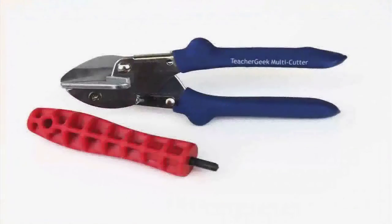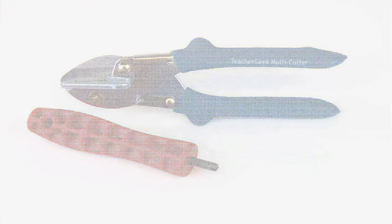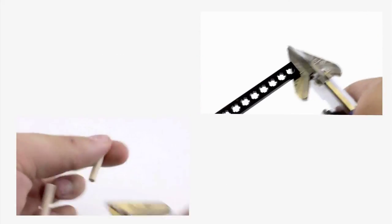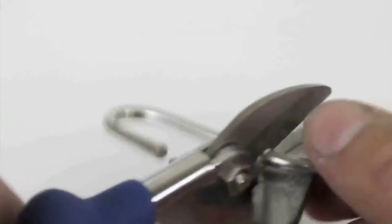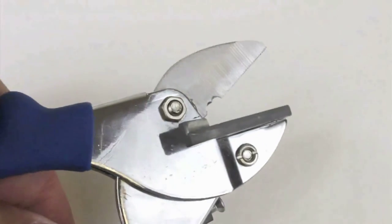The teachergeek construction system allows you to build almost any mechanism you can imagine using two simple tools. The dowels and connector strips can be easily cut to size using our teachergeek multi-cutter. But don't use the multi-cutter to cut metal because you'll ruin the blade.